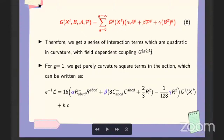Now the prepotential can be expanded as follows where g equals zero will describe the minimal part of the Lagrangian and the small g greater than or equal to one will give us the series of interaction terms which are quadratic in curvature with field dependent coupling. Hence, by appropriately choosing the prepotential G, for instance, if we choose g equals one, we will get a purely curvature square terms in the action. And by appropriately tuning this coefficient alpha, beta and gamma, we can write down our arbitrary curvature square term coupled to arbitrary holomorphic function of vector multiplet.